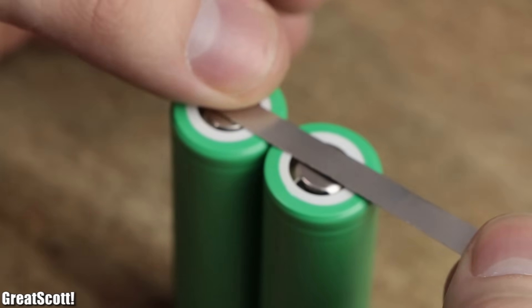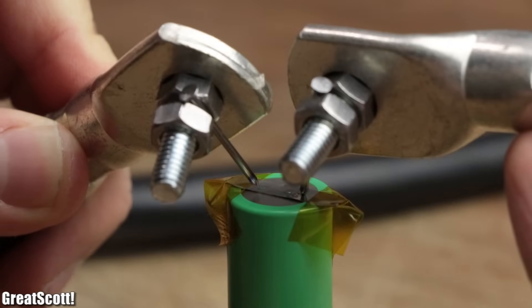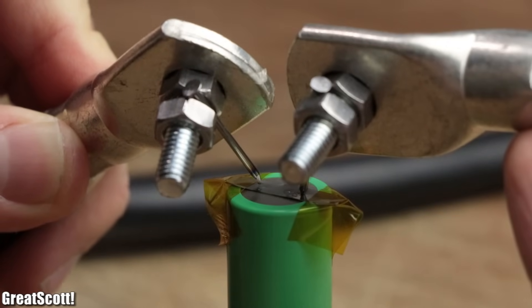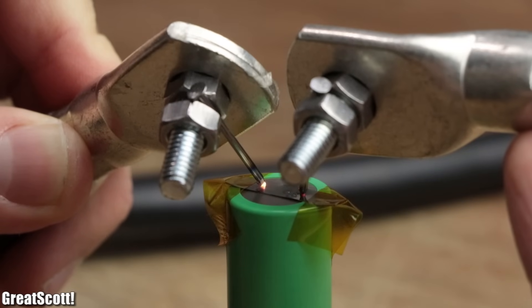Now there are two ways to attach the ribbon to the batteries. The first and recommended way is to use a spot welder, which utilizes a burst of energy in a very short amount of time to weld the ribbon to the battery.